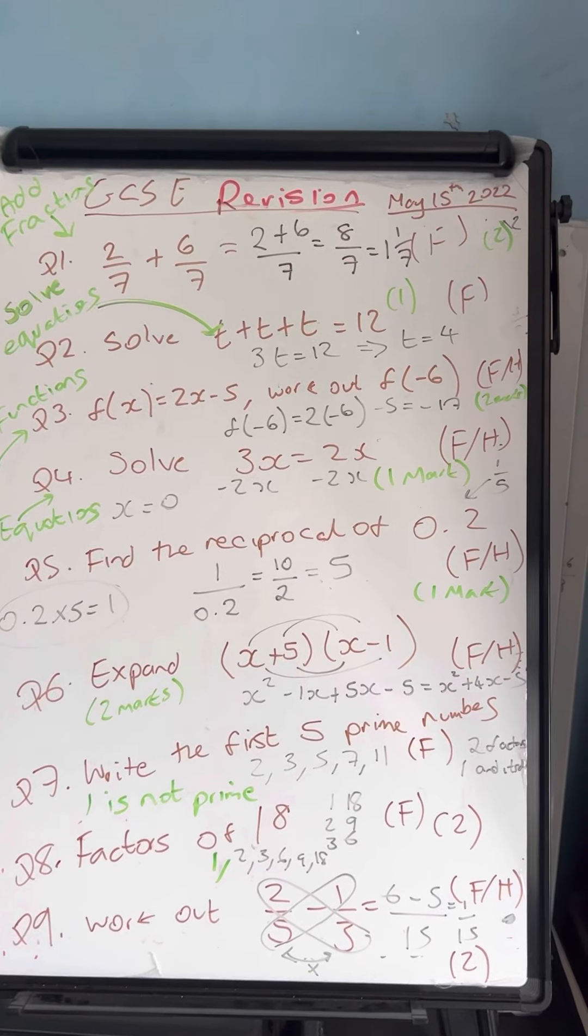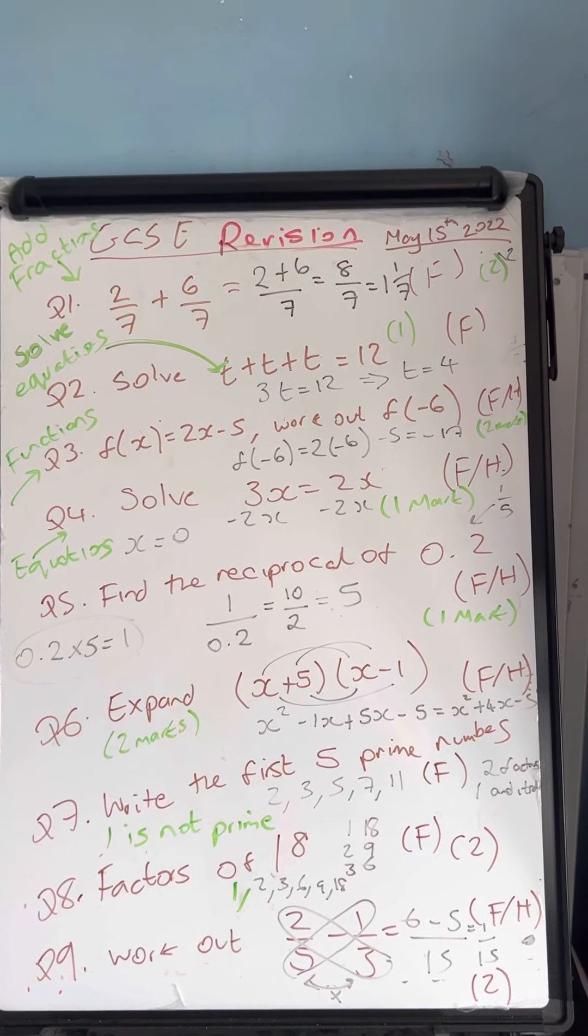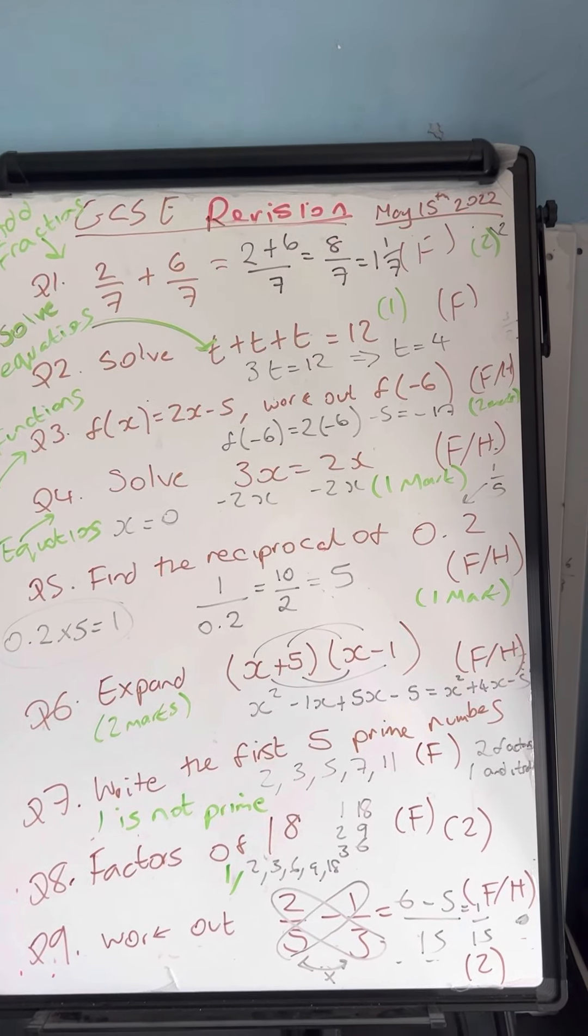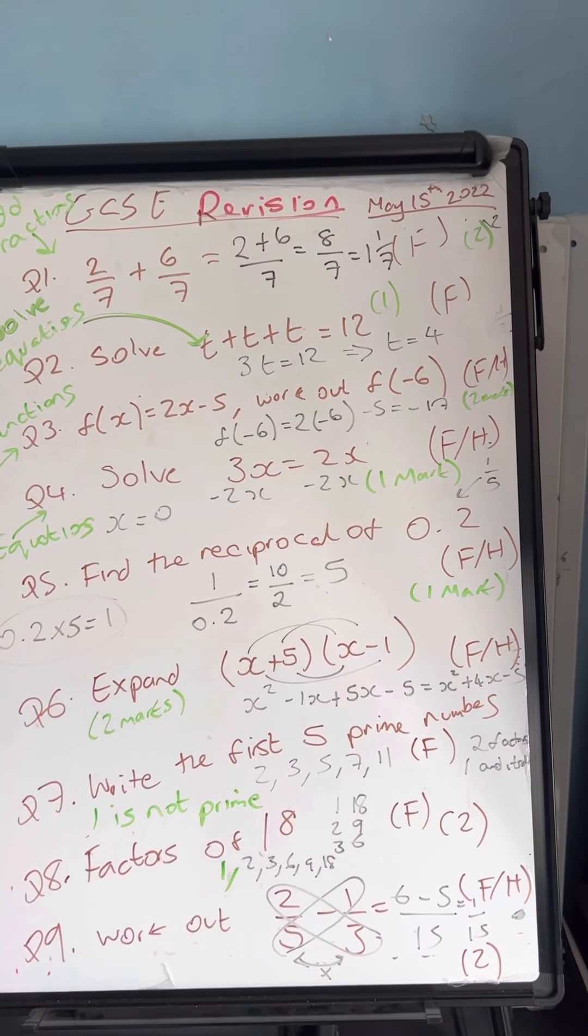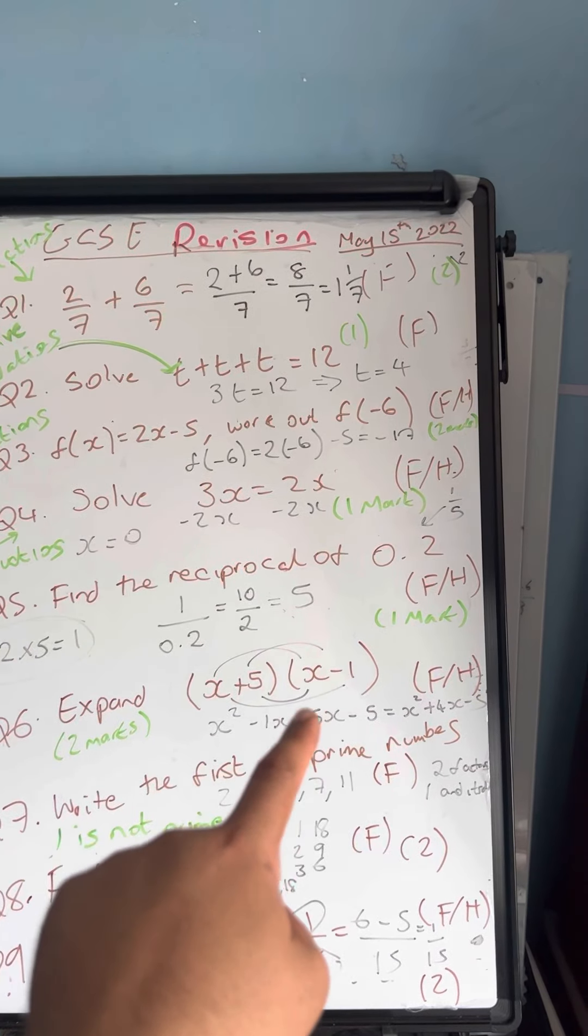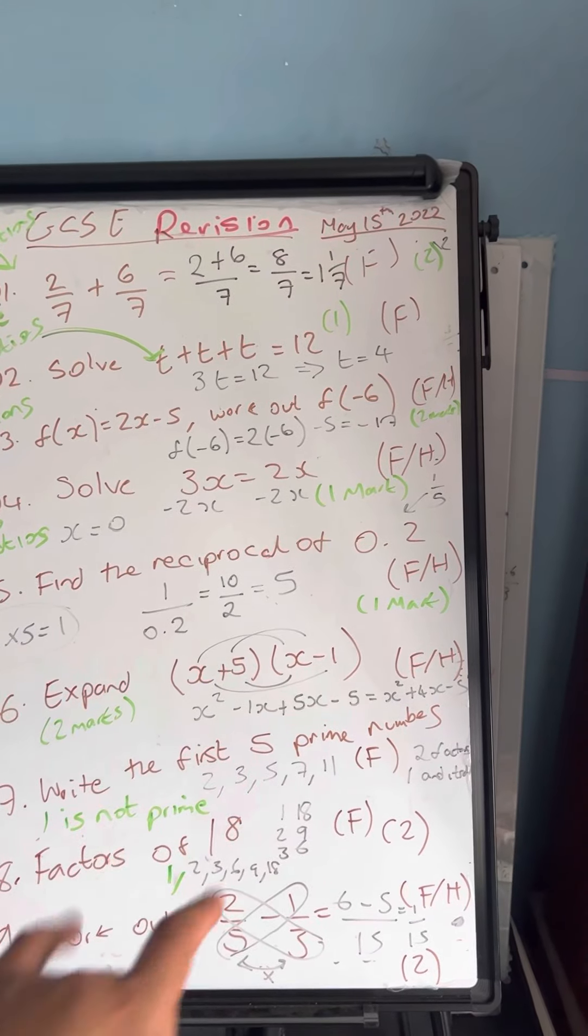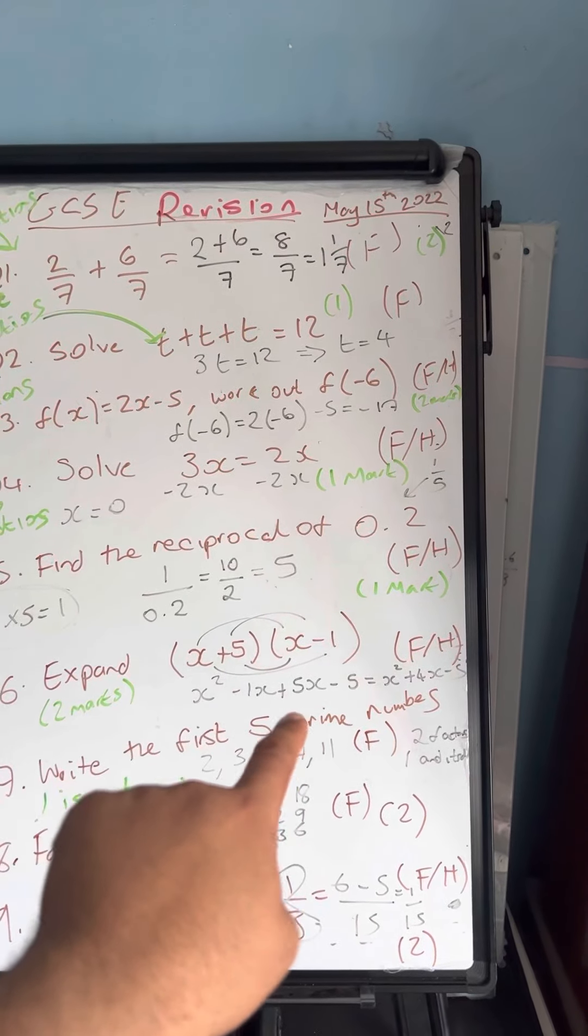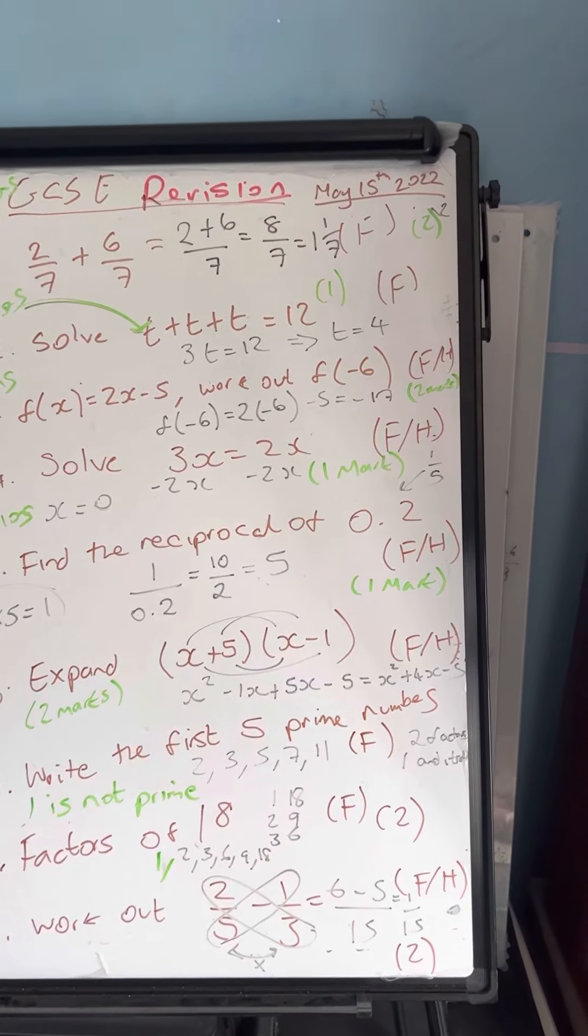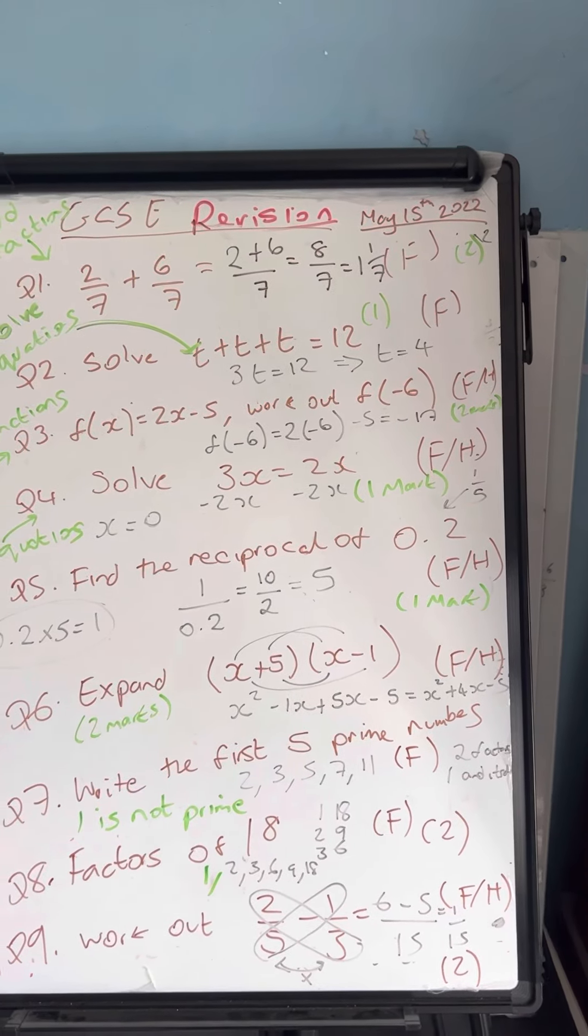This is question number six. Expanding a double bracket. Remember that it's always worth two marks: one mark for expanding, and then one mark for collecting the like terms. X times X is X squared minus 1X plus the 5X minus 5. Collecting your like terms, minus 1X plus 5X is plus 4X. So your final answer is X squared plus 4X minus 5.